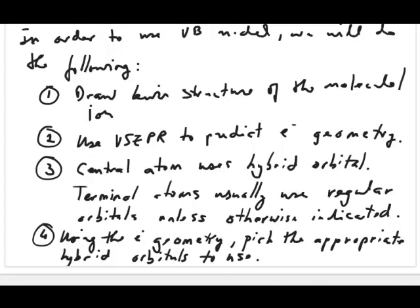Before working on an example, let's clarify how we use the valence bond model and hybrid orbitals in CHEM 11. Because we can't do full quantum mechanical calculations to predict hybrid orbitals, we incorporate Lewis structures and VSEPR to figure out what hybrid orbitals to use. You start by drawing the Lewis structure, then use VSEPR to predict the electron geometry — not molecular geometry — meaning how many pairs of electrons surround the central atom.